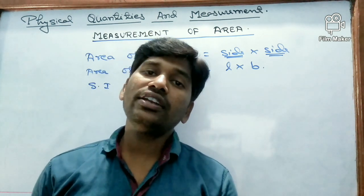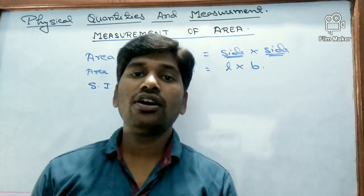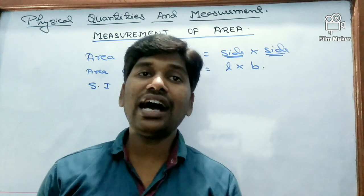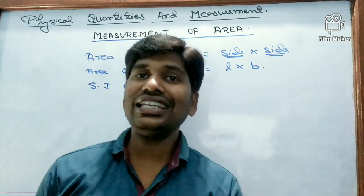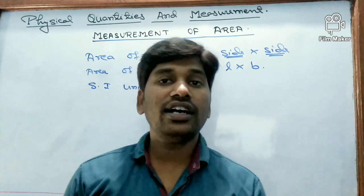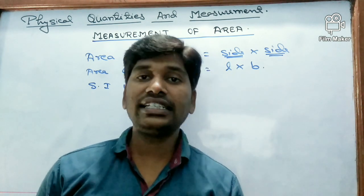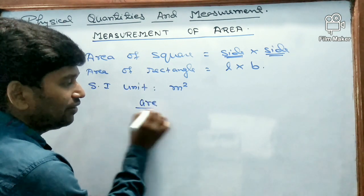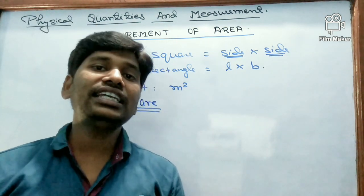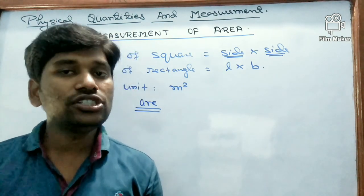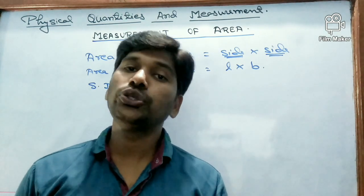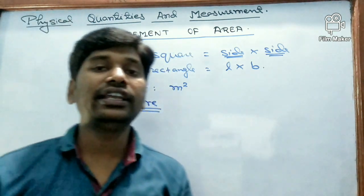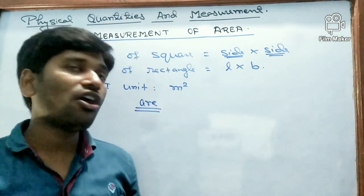To measure smaller areas we use centimeter square or millimeter square. Large areas are expressed in other units like hectare or are. 'Are' (written as A-R-E) is a unit of area used to measure large areas like a piece of land or plot. A plot can be measured in are or hectare.